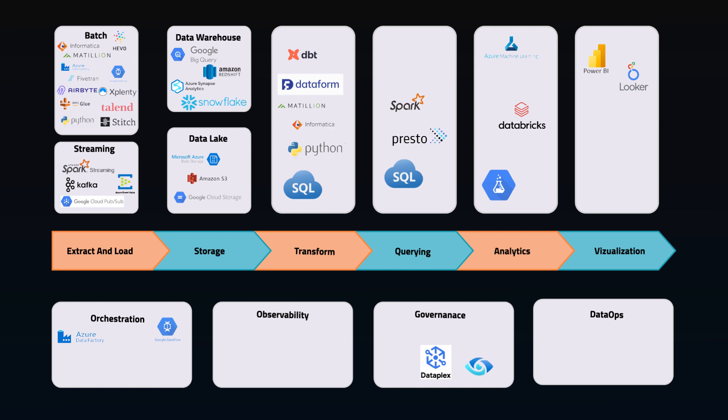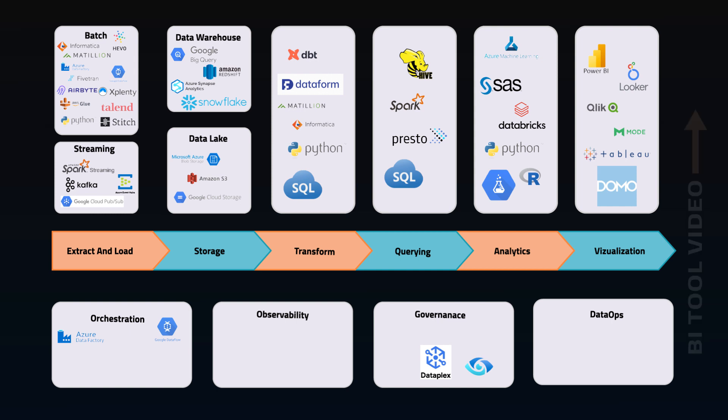For querying, we'll add in Presto, which powers AWS's data lake queries, and then of course Hive for Hadoop and Databricks. For analytics, we've got some old-school tools like SAS and custom home-built options using Python and R. And for visualization, we're going to add in Qlik, Mode, Domo, and of course Tableau. There's a bunch of visualization tools — I break them out in a BI video in the card here.